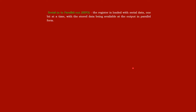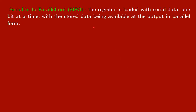Serial In Parallel Out (SIPO): the register is loaded with serial data one bit at a time — only one bit is loaded at a time — and that bit will be shifted to the output in a parallel form.